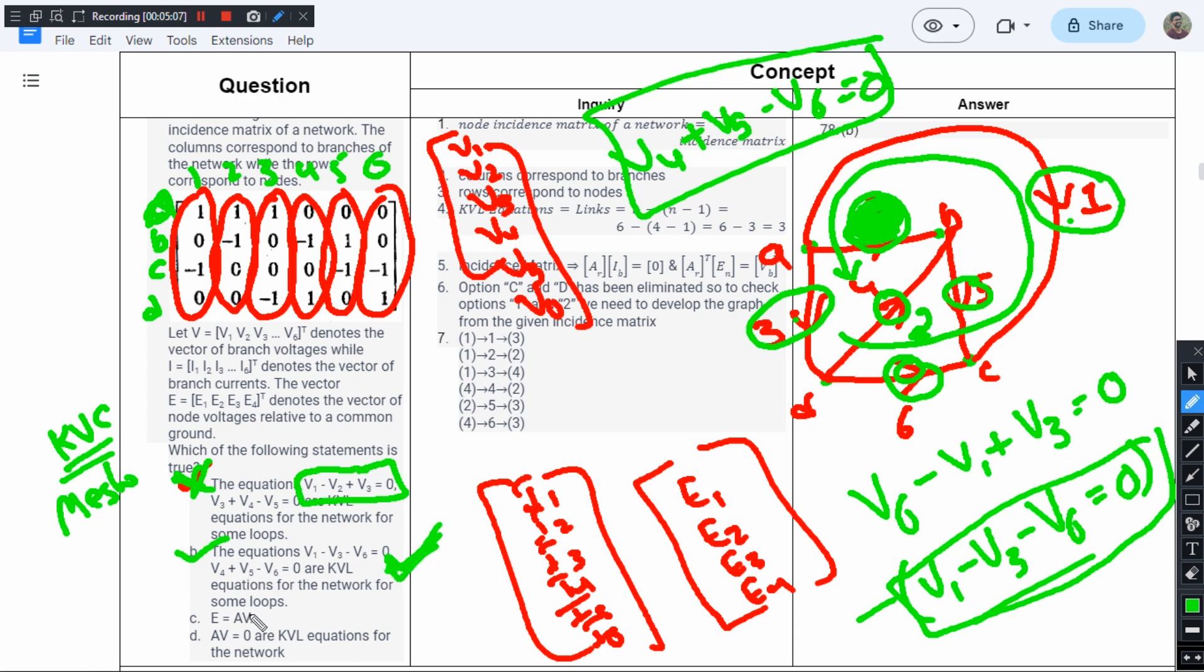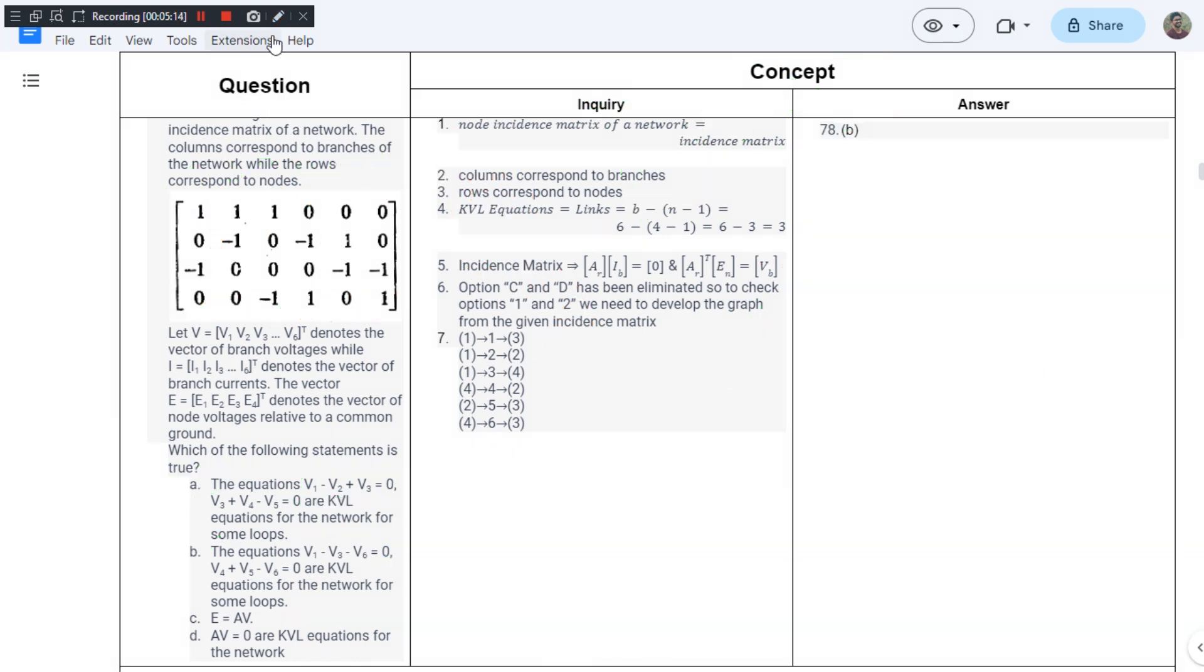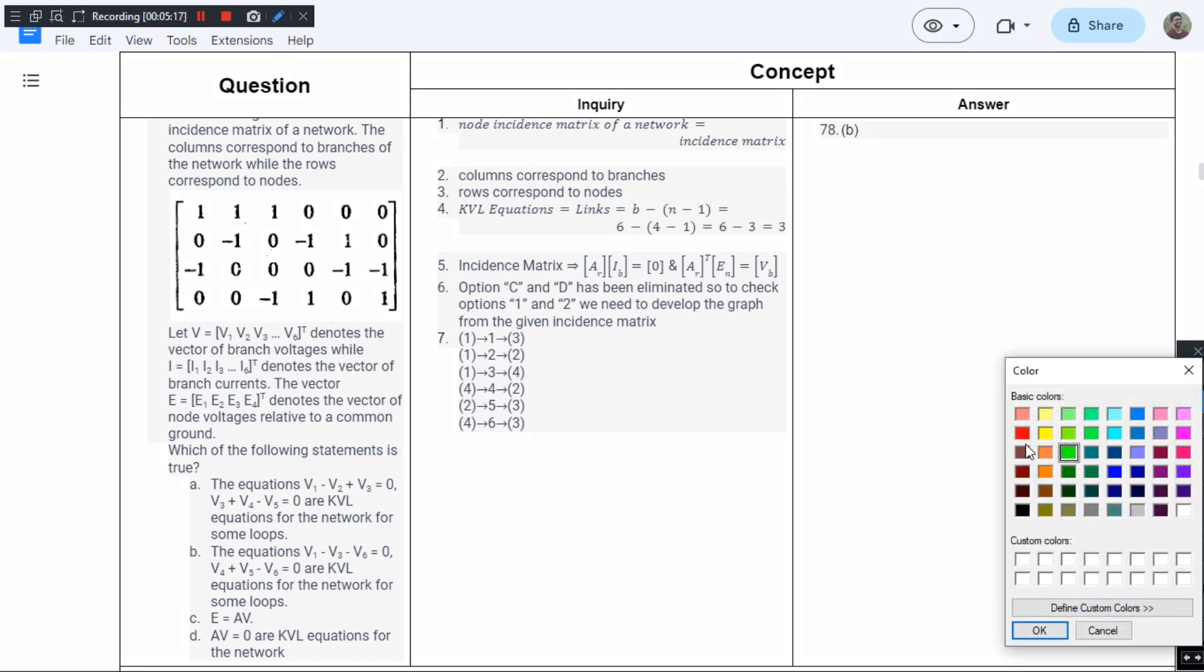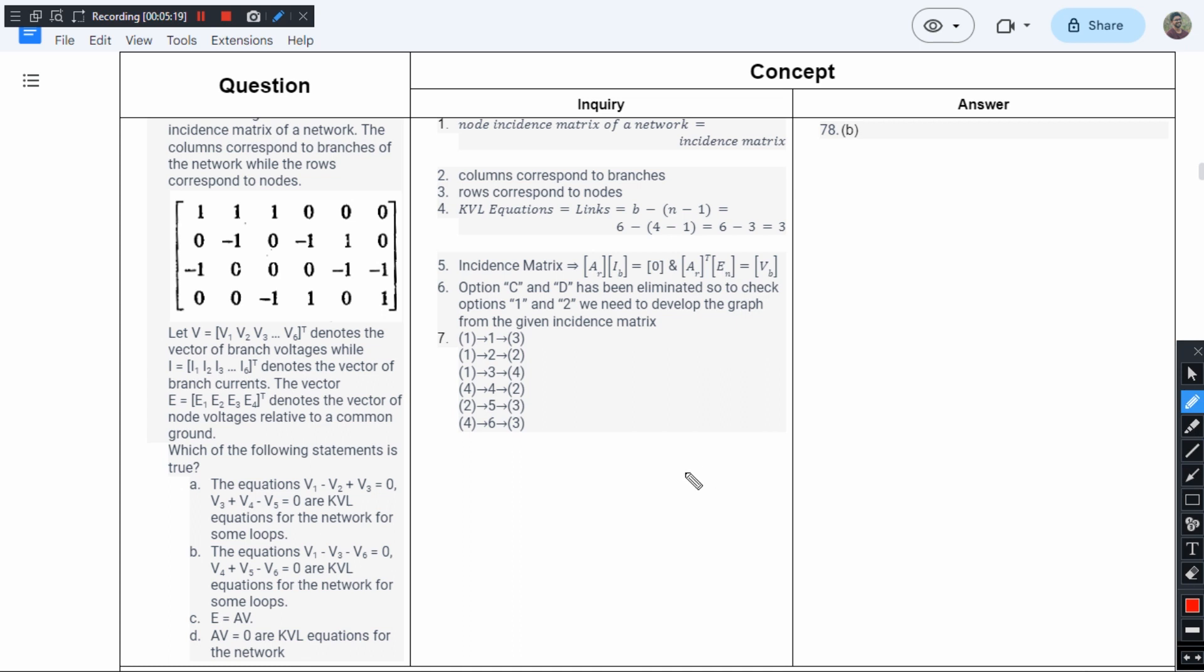But let us also check options C and D. Whenever we're talking about incidence matrices, we need to know this relationship. Incidence matrix is used for nodal analysis. In nodal analysis, we try to get the KCL equations.